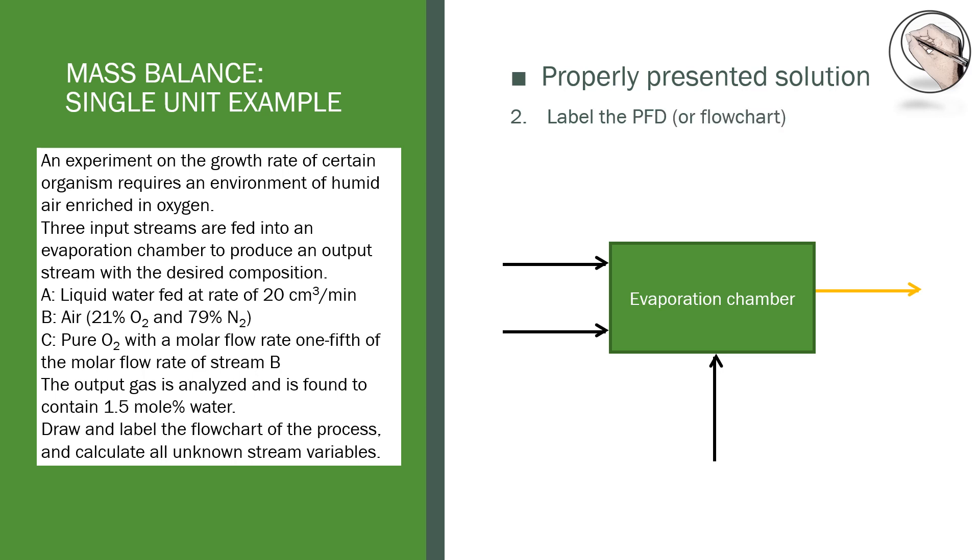The next step is to label the PFD. I like to use numbers so that the notation goes along with the stream number followed by the component label for each stream. Lastly we can add the detailed stream variables which are included in the example.